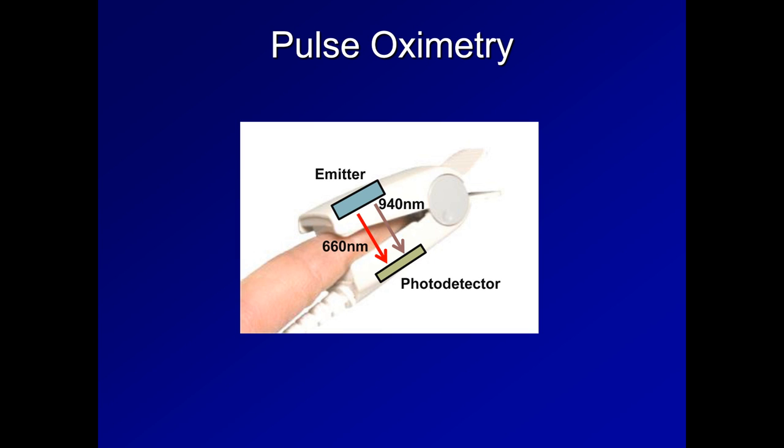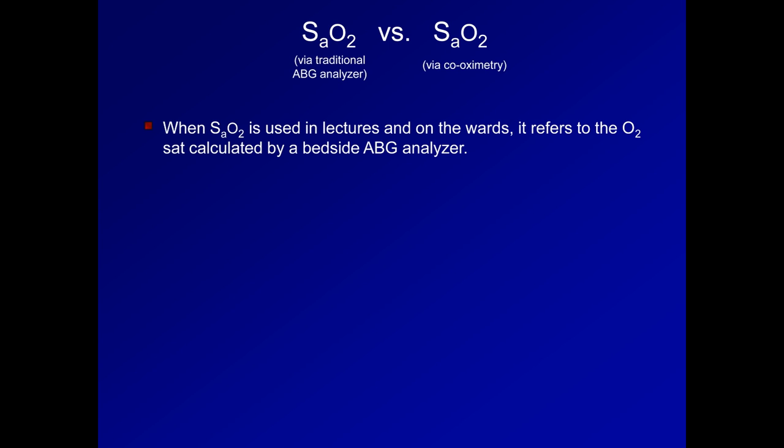Now that I've discussed how SpO2 is determined, I'm going to talk a little more about SaO2. The first important point is that the definition of SaO2 is not universal. There is SaO2 as calculated via traditional ABG analyzer, and there is SaO2 as measured via a device known as a co-oximeter. When the term SaO2 is used in lectures and on wards, it almost always refers to the O2SAT that is automatically calculated by a bedside ABG analyzer.